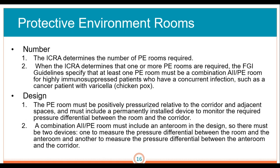Regarding protective environments: the ICRA determines the number of PE rooms required. When the ICRA determines that one or more PE rooms are required, the FGI guidelines specify that at least one protective environment room must be a combination of an AII room and protective environment room for highly immunosuppressed patients who may have a concurrent infection, such as a cancer patient with varicella. The protective environment room must be positively pressurized relative to the corridor and must include a permanently installed device to monitor the required pressure differential. A combination AII-PE room must include an ante-room, with one device measuring pressure between the room and the ante-room, and another measuring between the ante-room and the corridor.